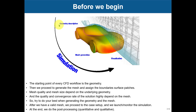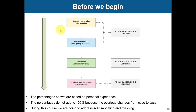Before moving on, let's remind you of the workflows of a CFD simulation. Everything starts from a geometry description — you have your solid model, which we addressed in Module 2, then you generate the mesh and run the simulation, and finally you visualize. The starting point is always the geometry, so everything depends on it. You need good geometries, which is why we also address solid modeling.